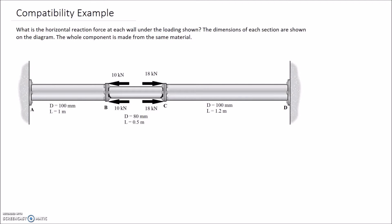We're asked what is the horizontal reaction force at each wall under the loading shown. The dimensions of each section are shown in the diagram and the whole component is made from the same material. I'm going to start by drawing the free body diagram of the overall member, and then apply equilibrium equations to develop relationships between the forces on the diagram.